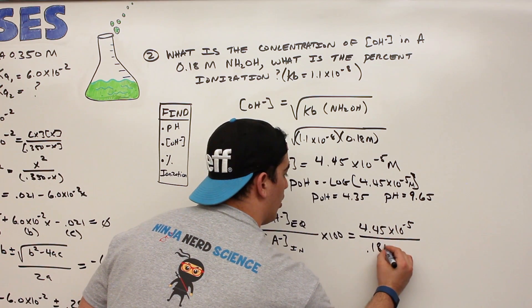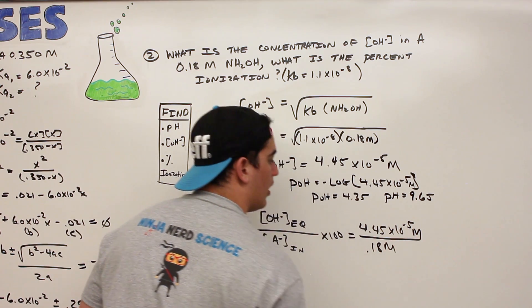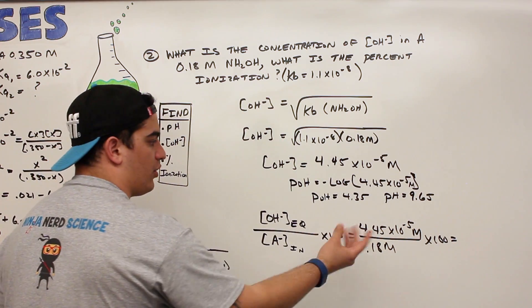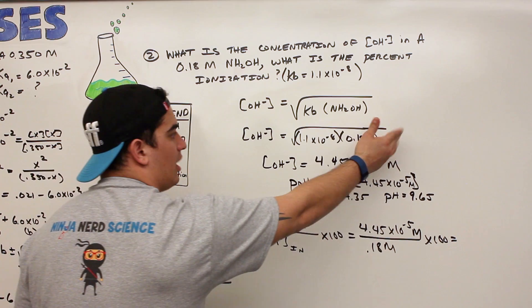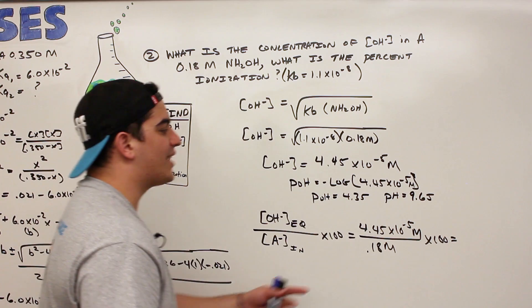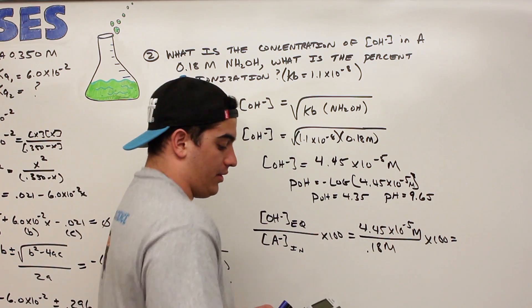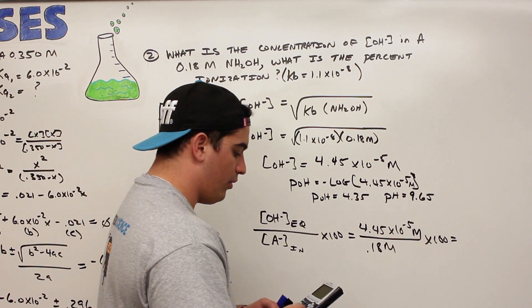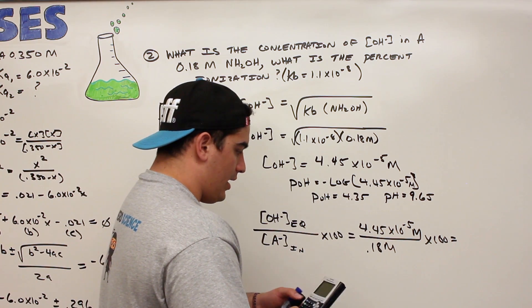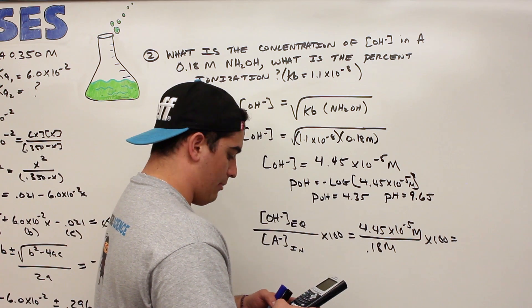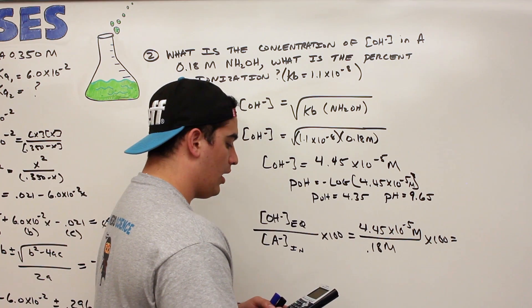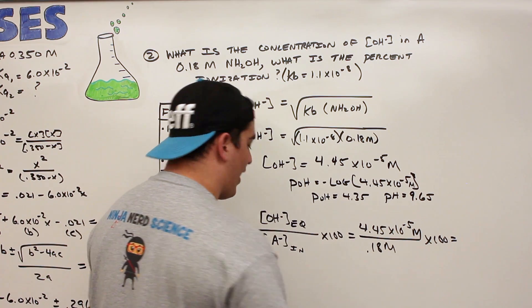This is molar, and then I'm going to multiply this by 100. And I said that this rule, if it's less than 5%, that means that that x that we blasted out of there and assumed was zero, that means that this rule works. It's also going to give me the percent ionization. So it's a positive thing. I'll get two things in one. So 4.45 E negative 5 divided by 0.18, and I'm going to multiply it by 100. I get 0.025 percent.